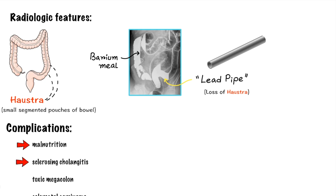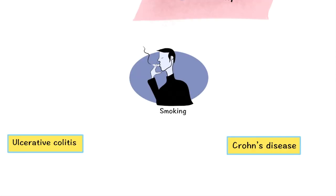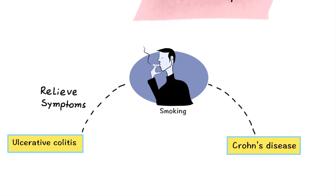Complications to remember include malnutrition, sclerosing cholangitis, toxic megacolon, and colorectal carcinoma. Ulcerative colitis is treated with sulfasalazine as the principal therapeutic choice. TNF-alpha antagonists like infliximab are also used, along with steroids and colectomy as additional options.